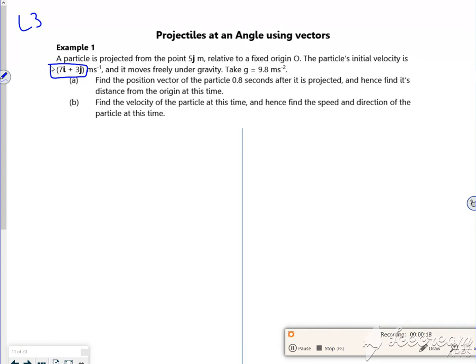So it says a particle is projected from a point 5J. So remember i is across and j is up. So that's 5 metres above the origin there.